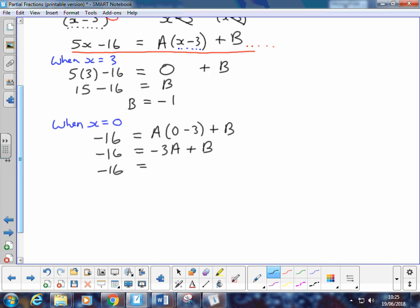Add 1 to both sides. Negative 15 is negative 3A. Divide through by negative 3, and A becomes 5.